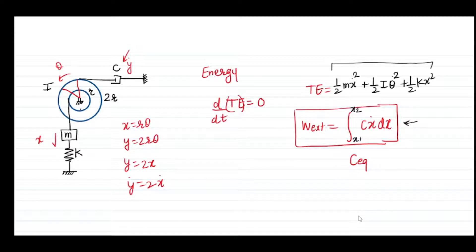When I differentiate the total energy my expression will become M X double dot. Before differentiation we replace theta dot, so one-half I theta dot squared can be written as one-half I X dot squared by R squared. Then I differentiate this term and finally get I by R squared X double dot and K X value.